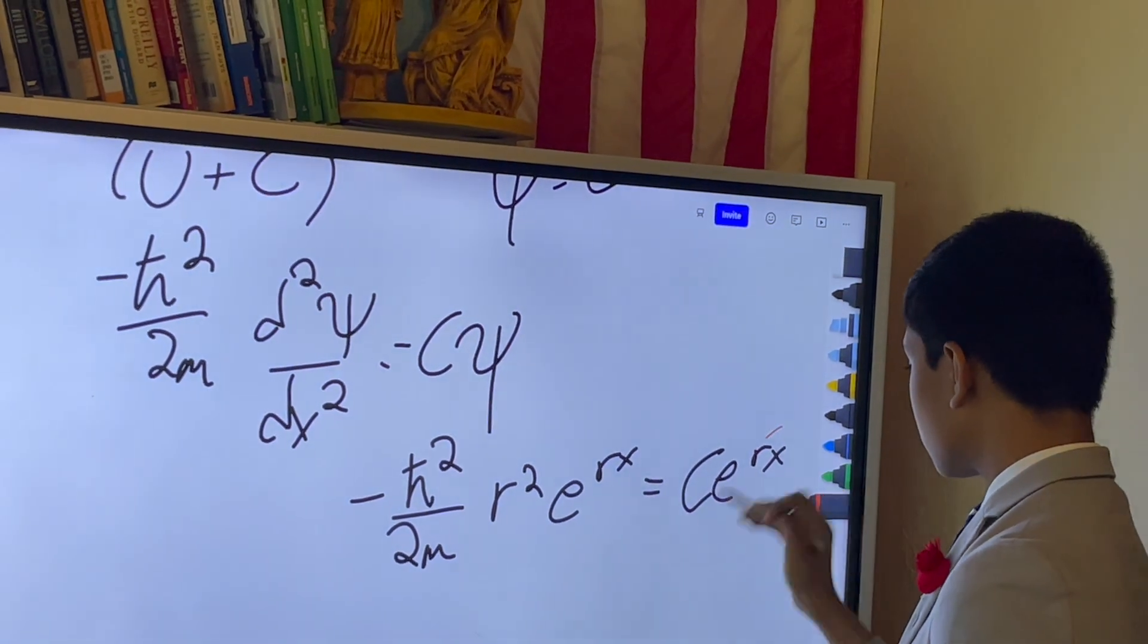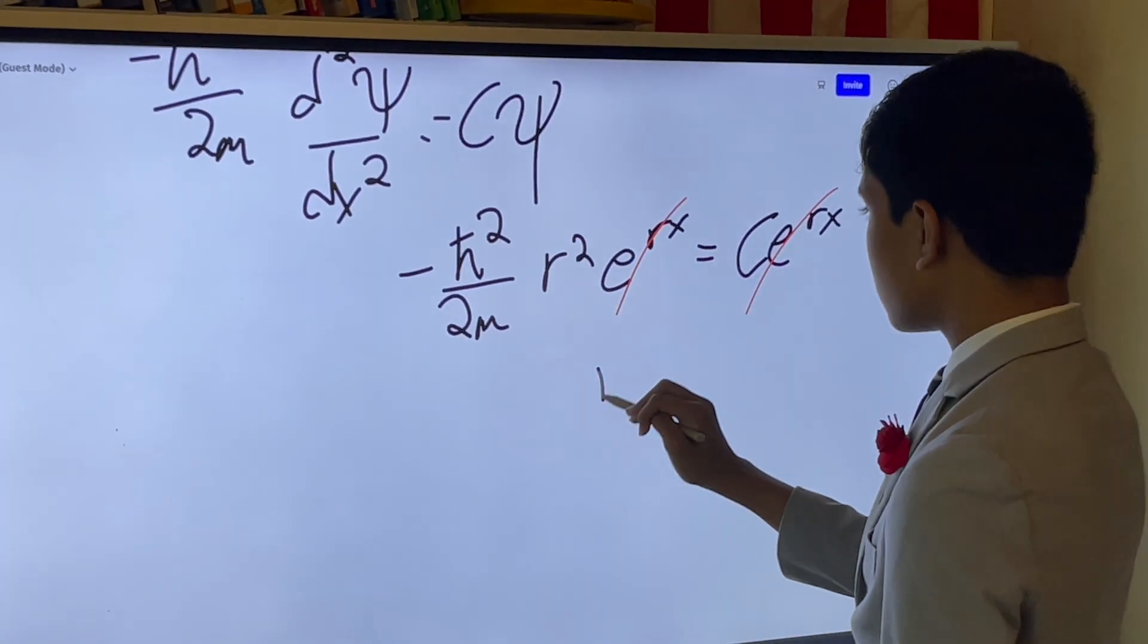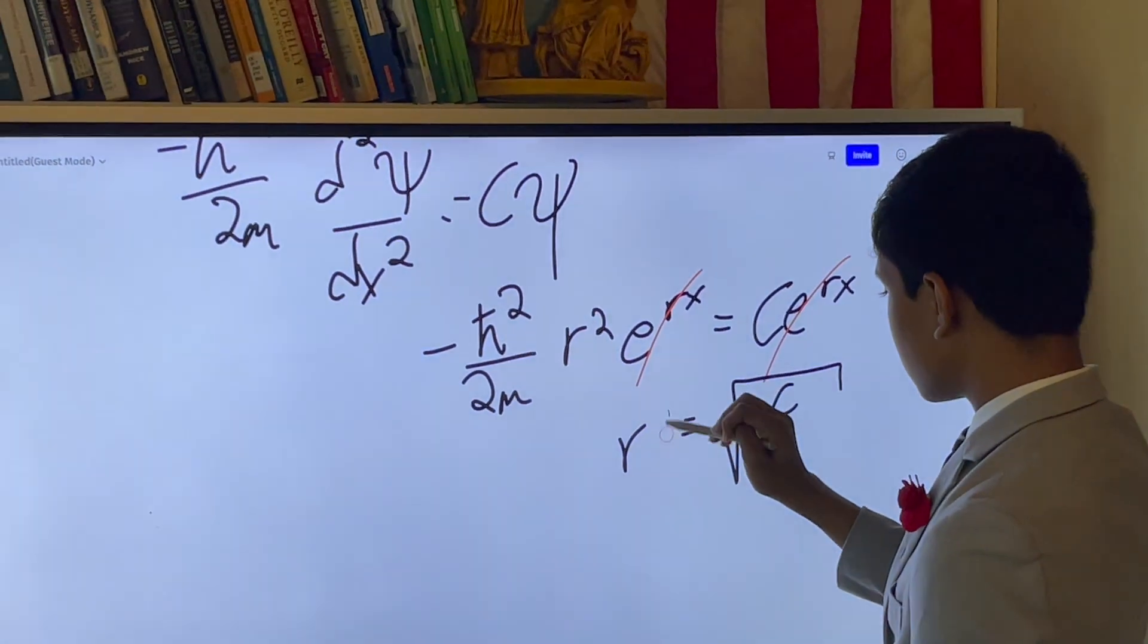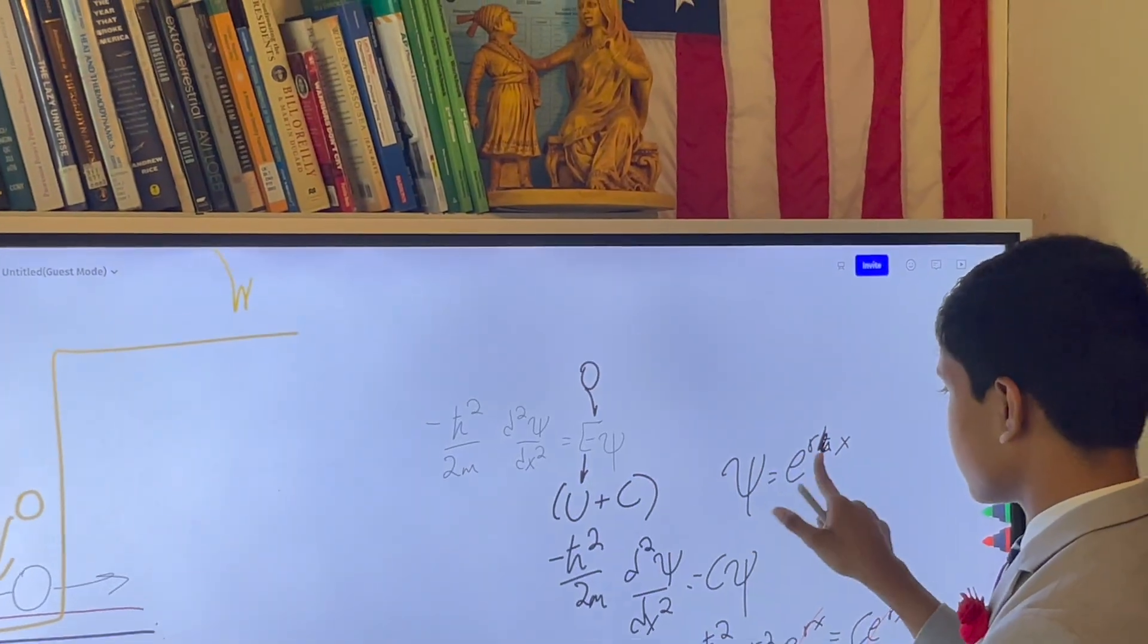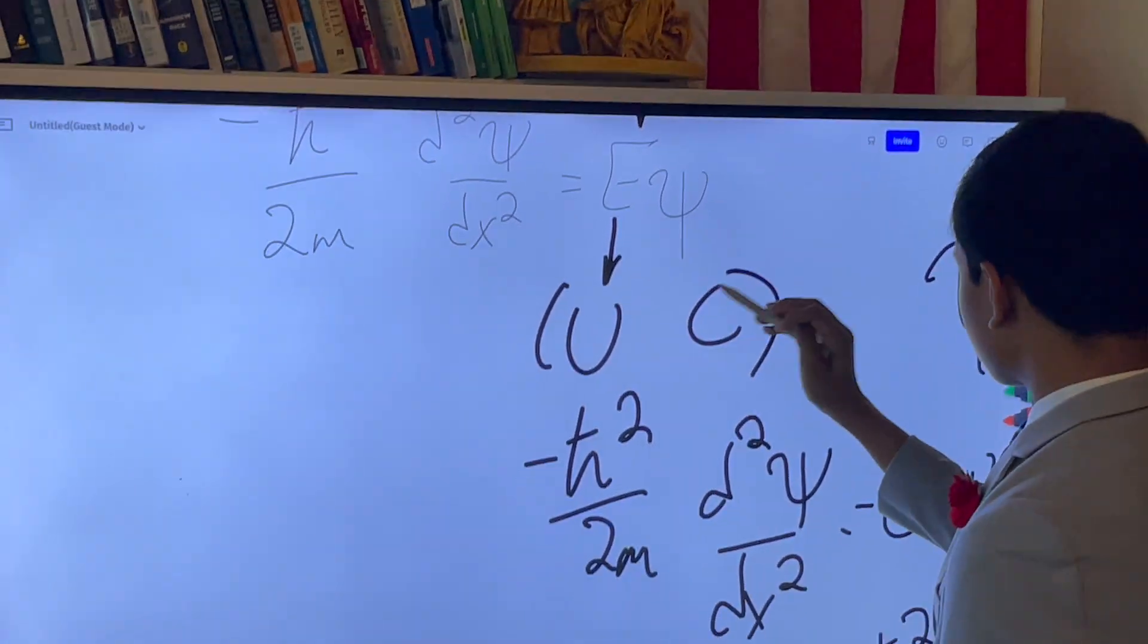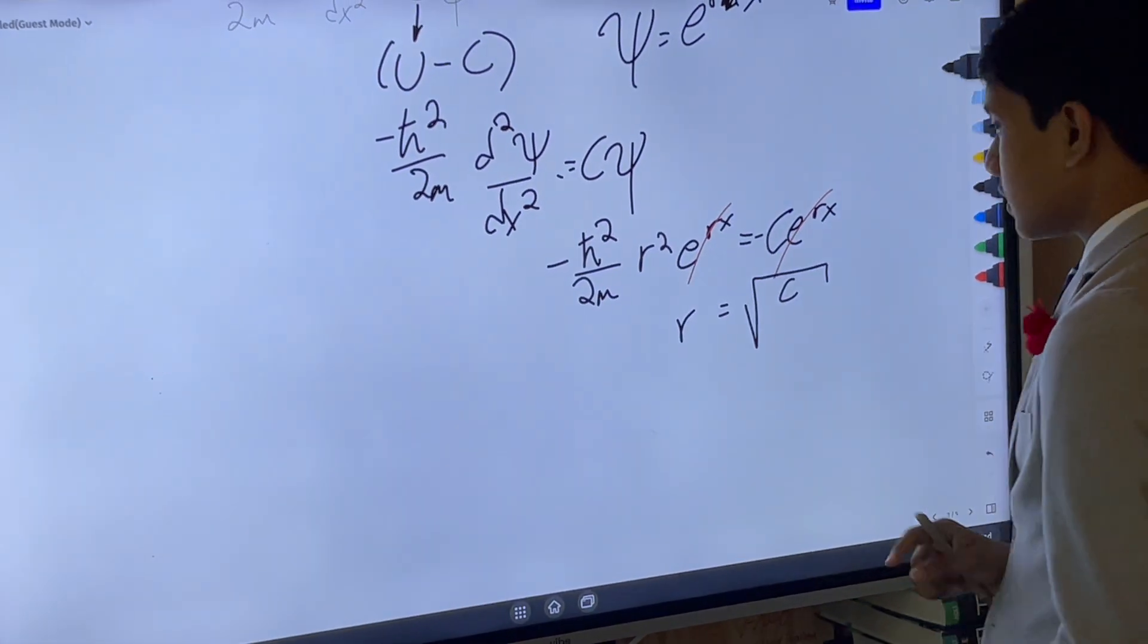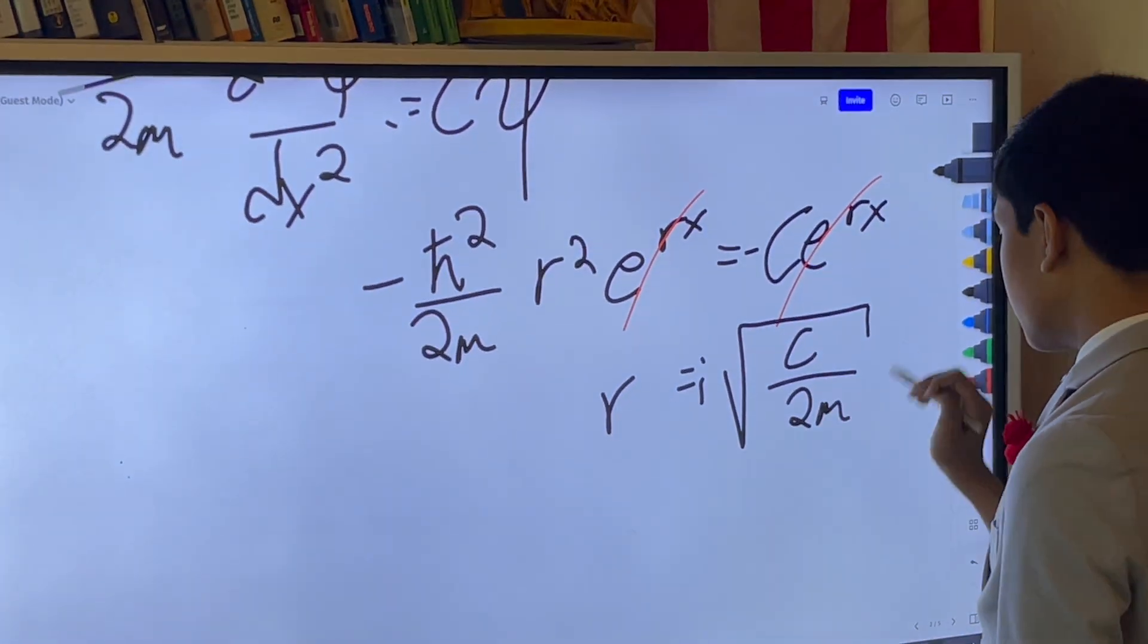You cancel the exponential term on both sides out. And you eventually get r squared is equal to the square root, sorry, r is equal to the square root h. Shouldn't that be positive? Oh, never mind. This is a negative sign.